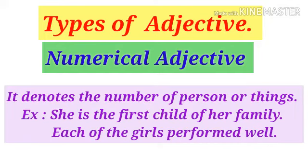The fourth kind of adjective is known as numeral adjective, and it denotes the number of persons or things — like one, two, three, four, or second, third, and so on. For example, 'She is the first child of her family' — 'first' is the numeral adjective. Another example: 'Each of the girls performed well' — 'each' is also a numeral adjective.